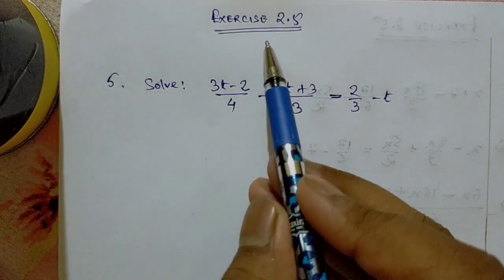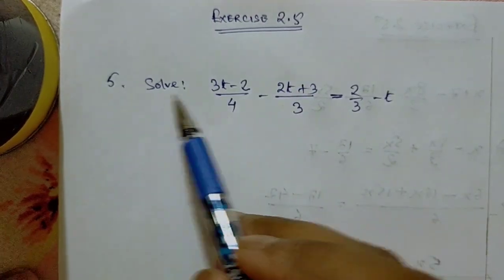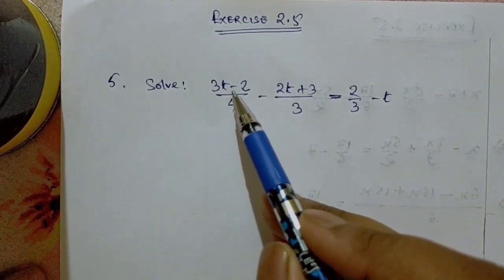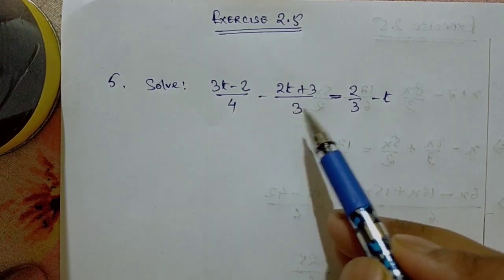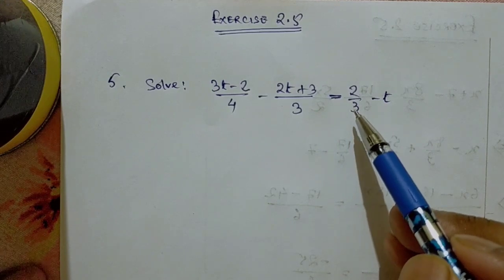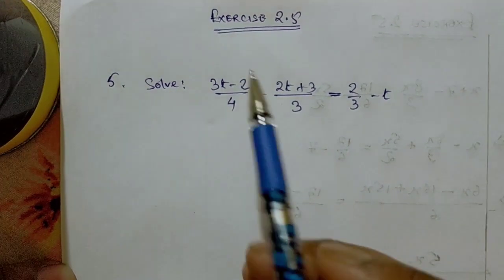Here we will see question number 5 of exercise 2.5. Our question is: solve (3t - 2)/4 - (2t + 3)/3 = 2/3 - t. So what we can see is that we have expressions containing the variable, not just variable terms but expressions.